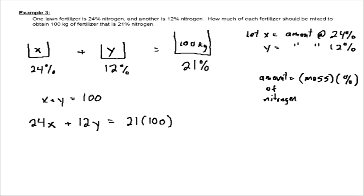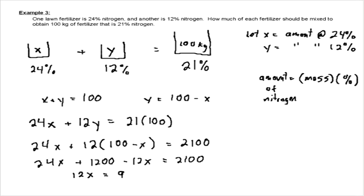Now we have a system of equations, two equations, two unknowns. Let's do substitution this time. So let's say that we solve this for y. So y is going to equal 100 minus x. Now I can take this y and I can substitute it into my second equation. And remember, the choice is up to you. If you want to do elimination every time, go for it. That's fine. So 12 and we're going to substitute 100 minus x and that's going to equal 2100. So now we're going to have 24x plus 1200 minus 12x is going to equal 2100. So we're going to get 12x is equal to 900 if we move things around and we're going to get an x value equal to 900 divided by 12, we get 75.